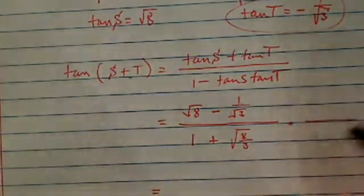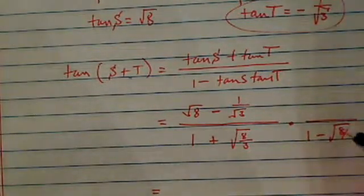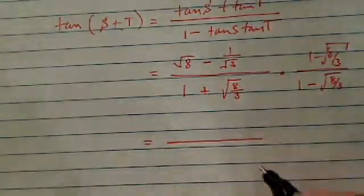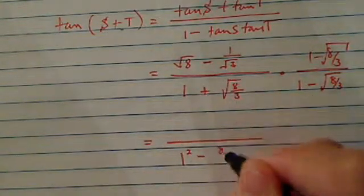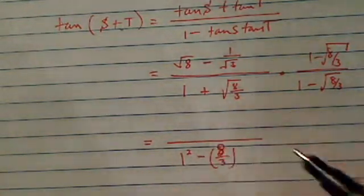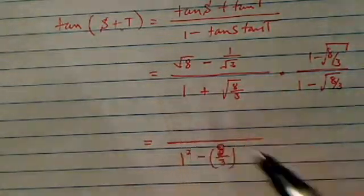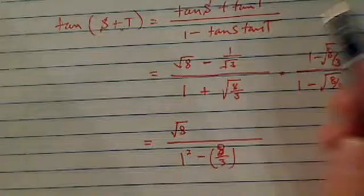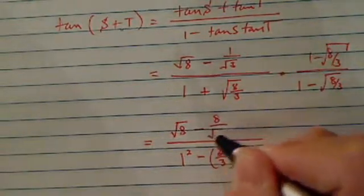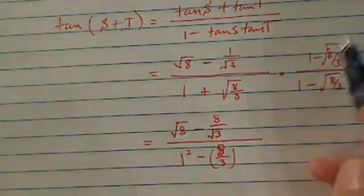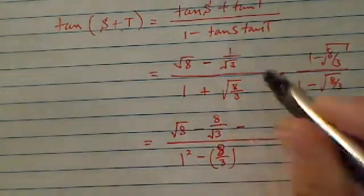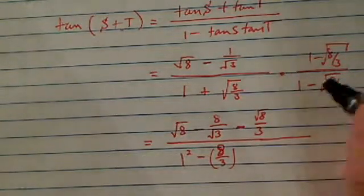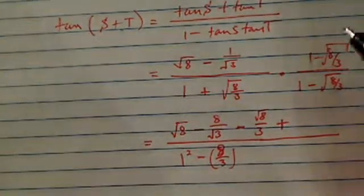Let's multiply the conjugate on the top and bottom. So one minus radical eight over three, one minus eight over three. The reason I'm doing that is I want to get rid of the radical on the bottom. So I have one squared minus the square, which is eight over three. I no longer have any radicals. On the top, we've got to be careful a little bit. So we have to multiply term by term. So eight and one, I have a radical eight. Let's write it down. Next one,